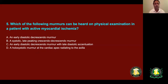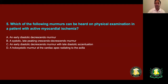Last question: which murmur can be heard on physical examination in a patient with acute myocardial infarction? The answer is C — S3 gallop, which occurs in patients with acute myocardial infarction. For any questions, contact me by email. Thank you and good luck.